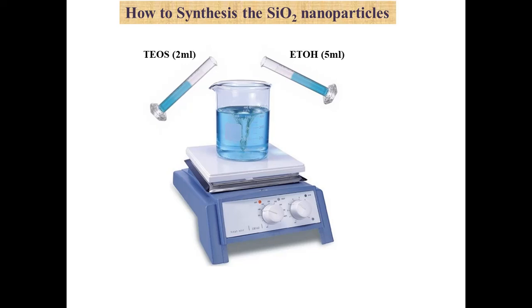At first, 2 ml of tetraethyl orthosilicate is added to 5 ml of ethanol. This solution is stirred for about 30 minutes.